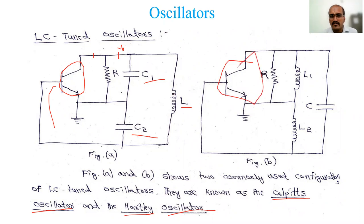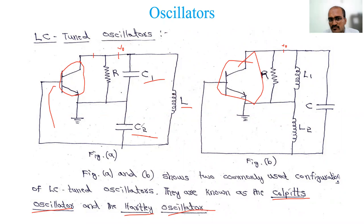In the Hartley oscillator, instead of a single inductor, there are two inductors and a single capacitor. A simple memory trick: Colpitts starts with C, so remember two capacitors C1 and C2. Hartley starts with H, which relates to Henry — the unit of inductance — so remember two inductors. This is just a mnemonic, not a rule.